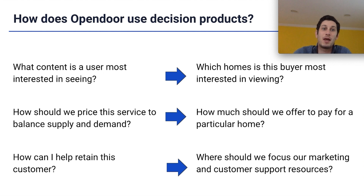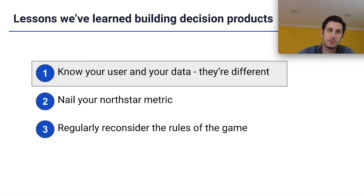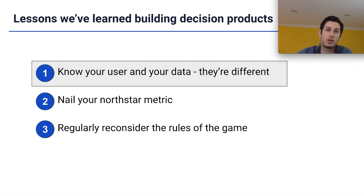We use decision products in many ways — for example, recommending homes that buyers may be interested in from our own inventory, figuring out how much we should offer to pay for a particular home a seller wants to sell to us, or how to focus our marketing and customer support resources across a large universe of homeowners. In the course of building these decision products, we've learned three key things: know your user and your data, nail your North Star metric, and regularly reconsider the rules of the game.